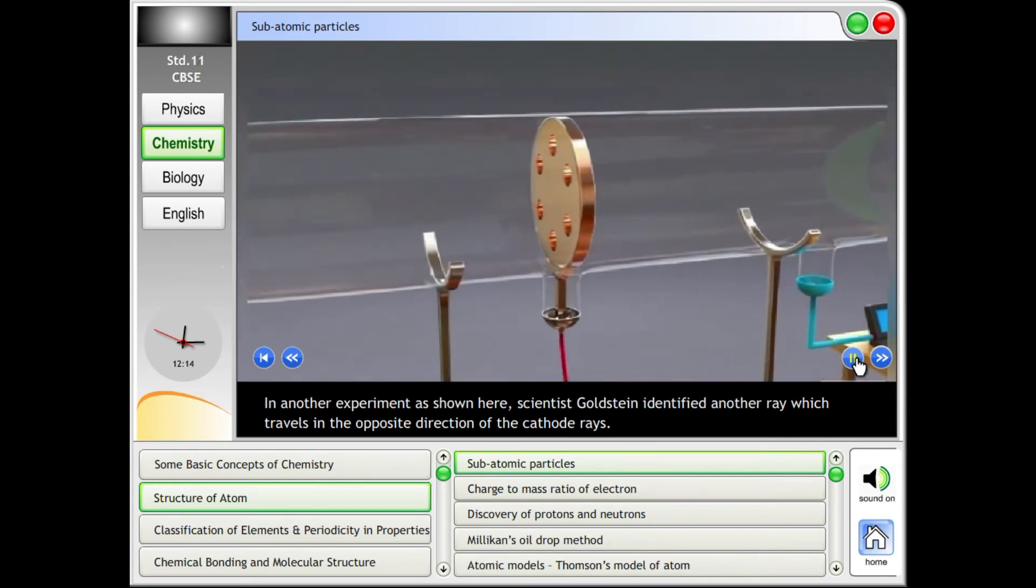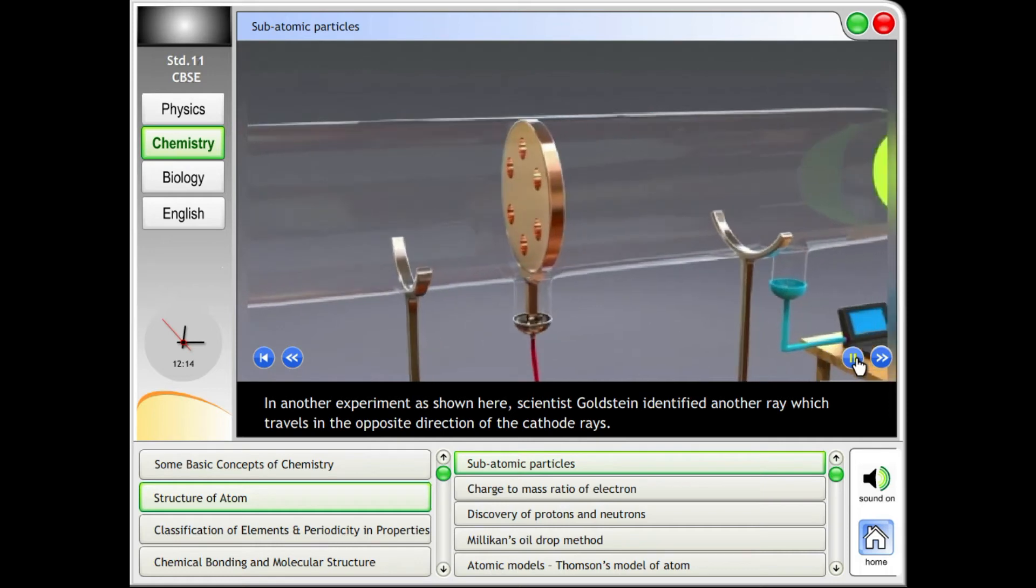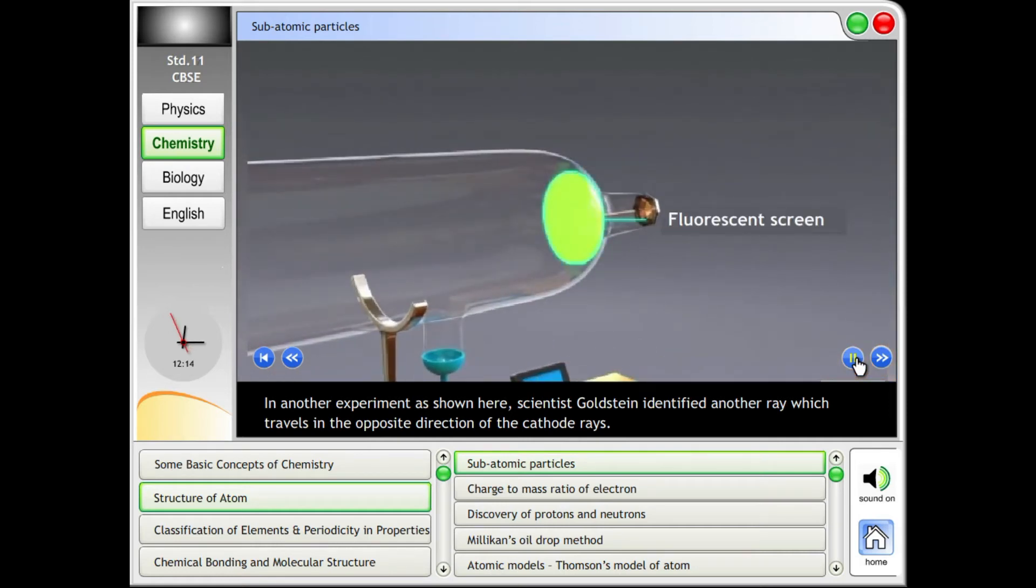In another experiment as shown here, scientist Goldstein identified another ray which travels in the opposite direction of the cathode rays.